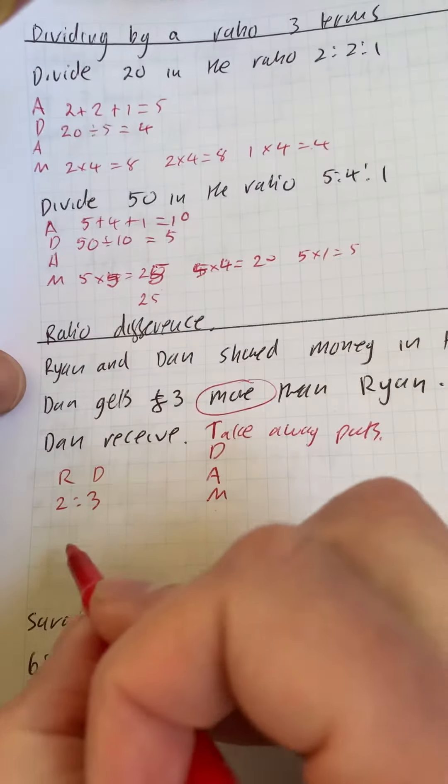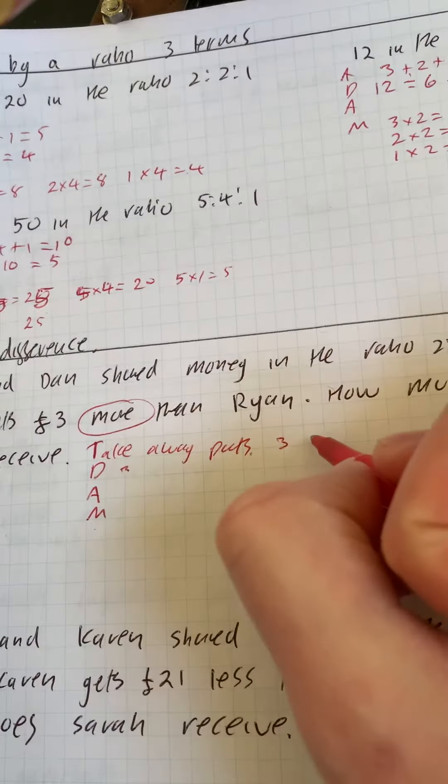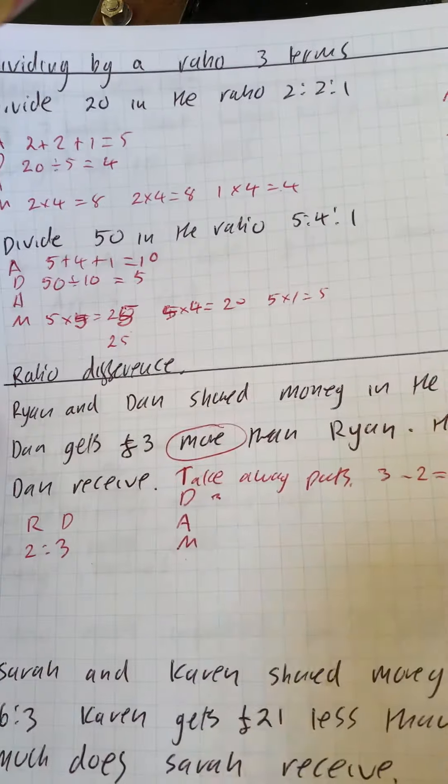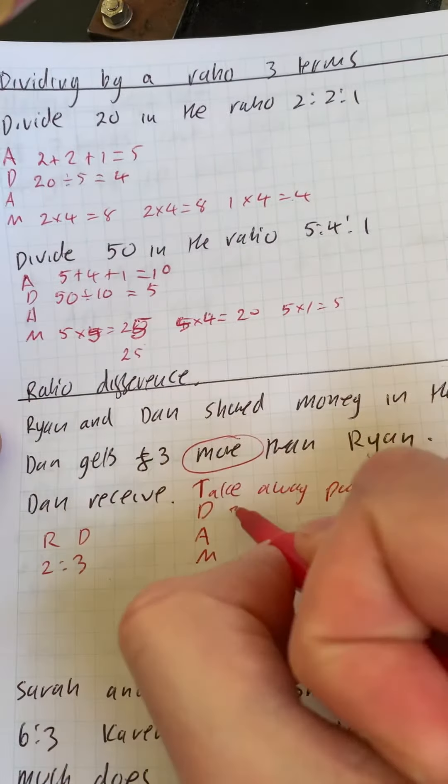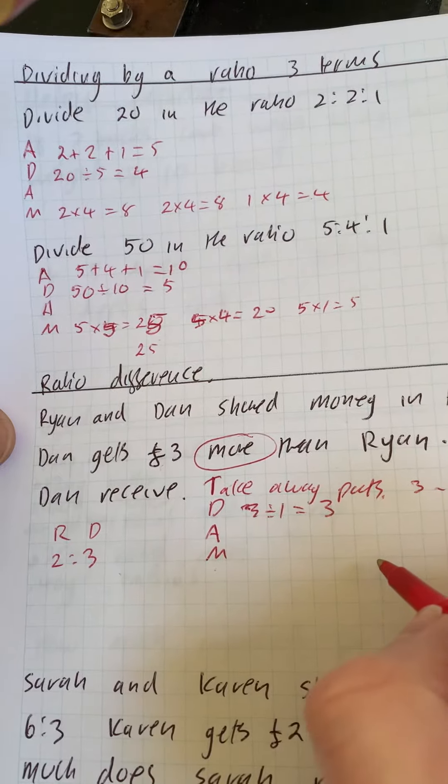So when we take away the parts, we've got three take away two, which is one. We then divide our total by one. So three divided by one is three.